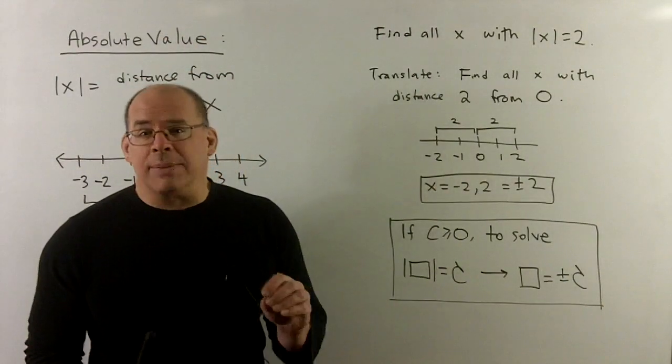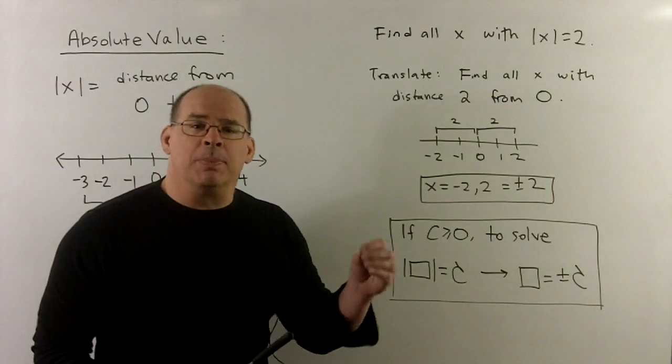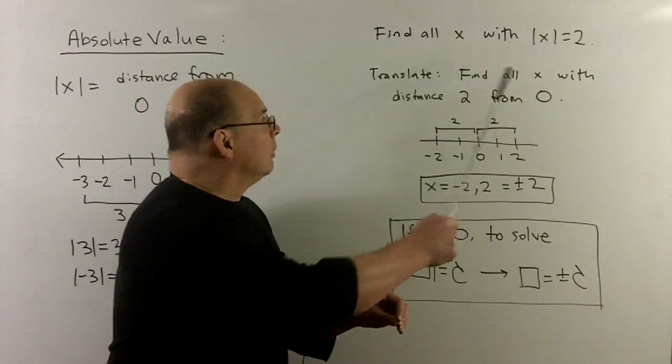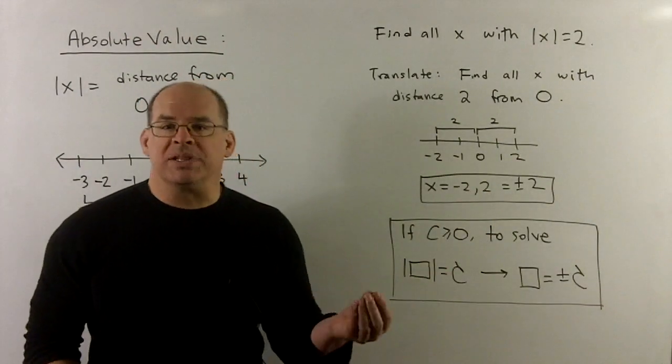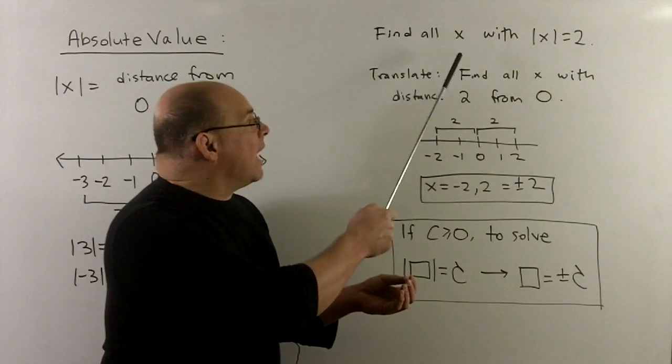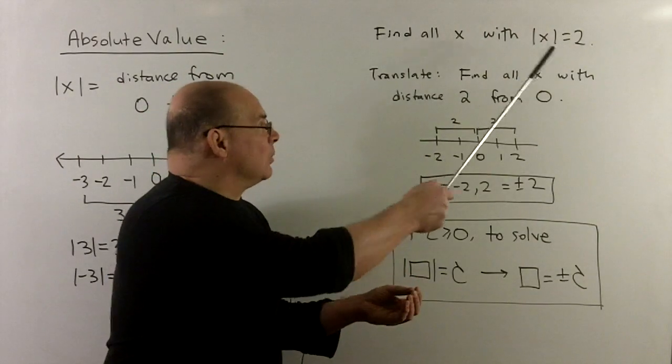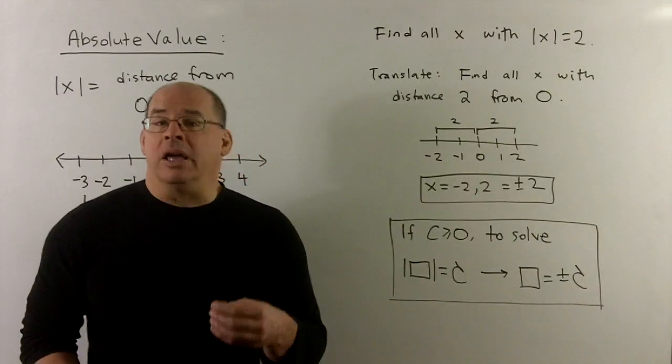Now, solving absolute value equalities, the most basic type we can give right here. So this would be something like, find all x with absolute value of x equal to 2. If we translate, that's the same as saying, find all x with distance 2 from 0.